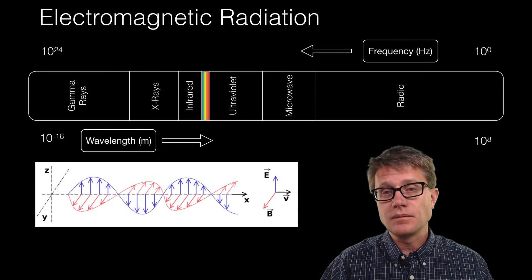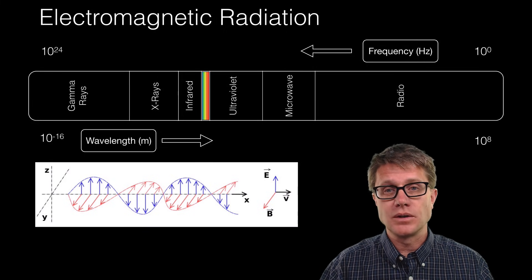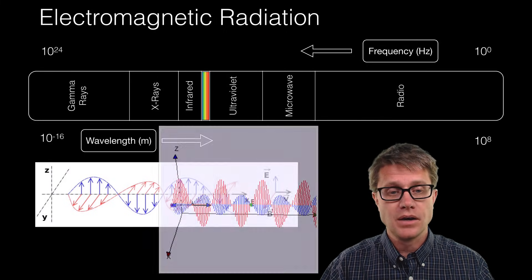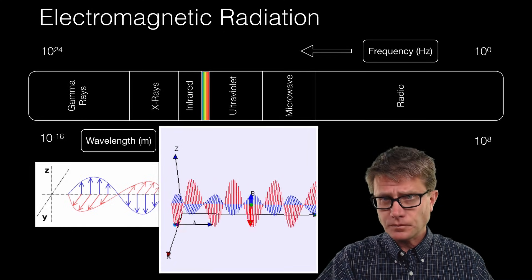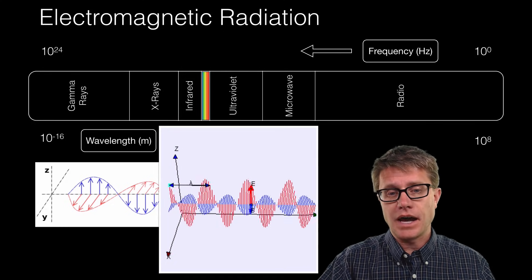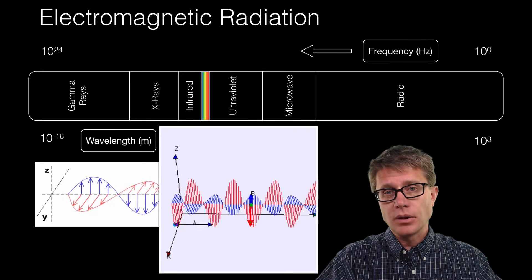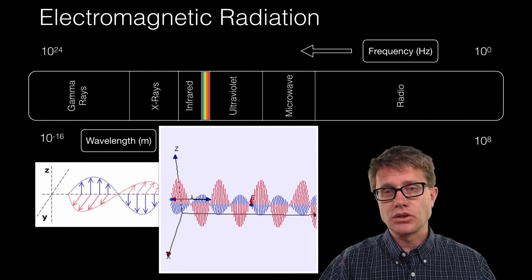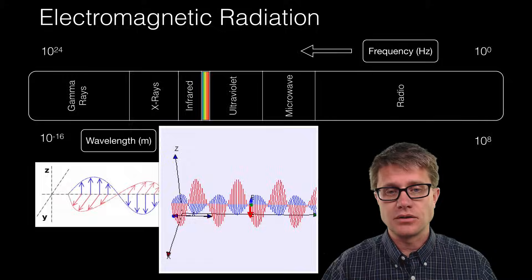And so our model up to the time of Einstein was that it was a transverse wave. That the waves are traveling in one direction. But there are electric fields and magnetic fields that act perpendicular to that. But we thought it was one continuous wave that was able to for example interfere.